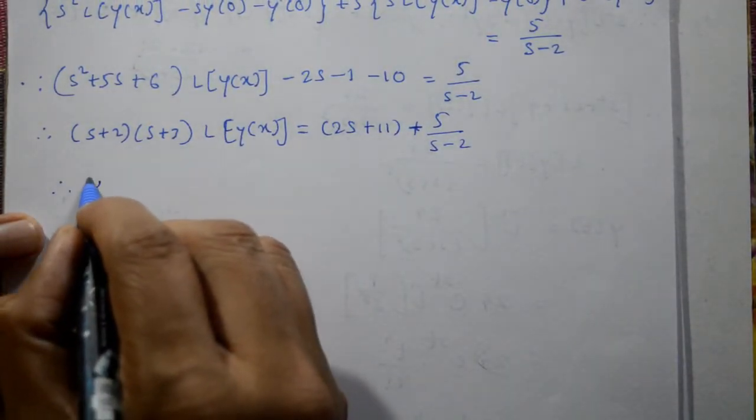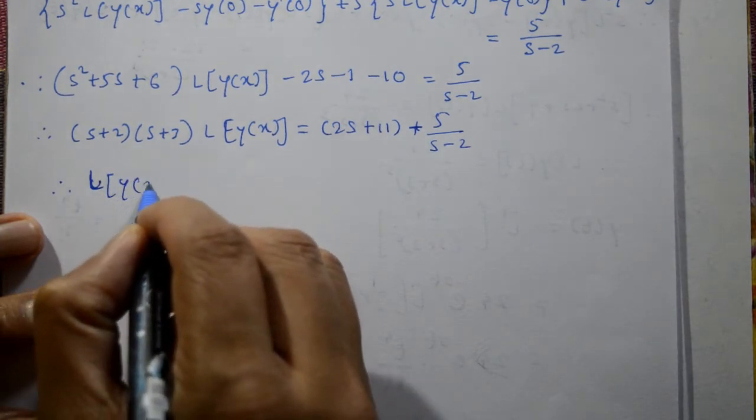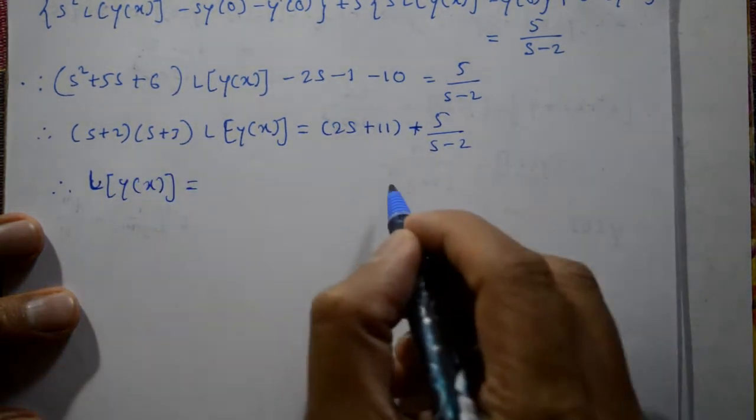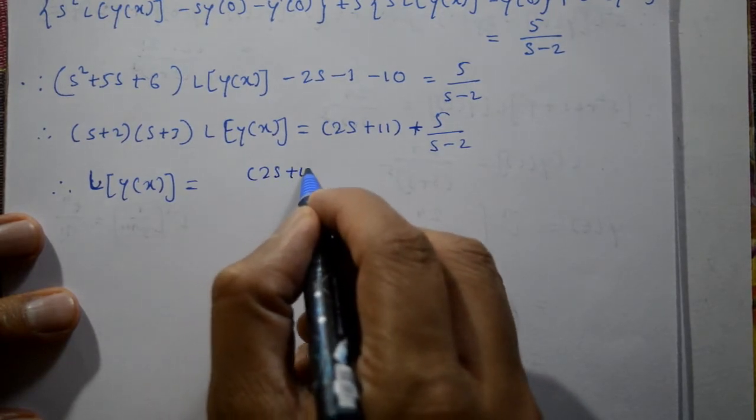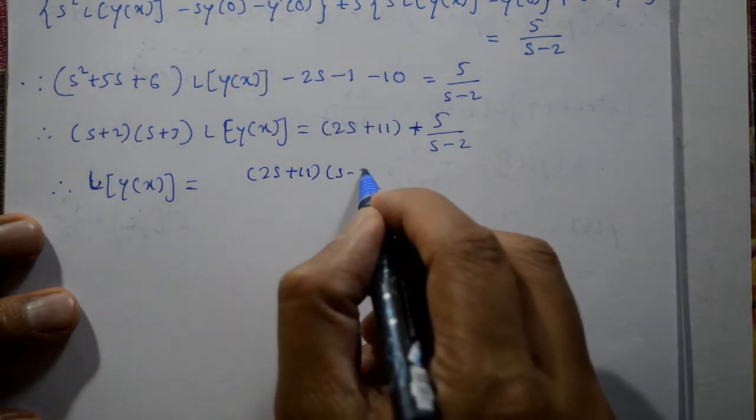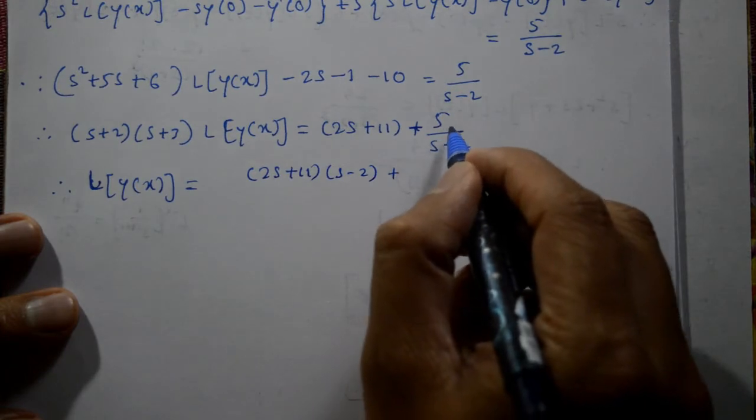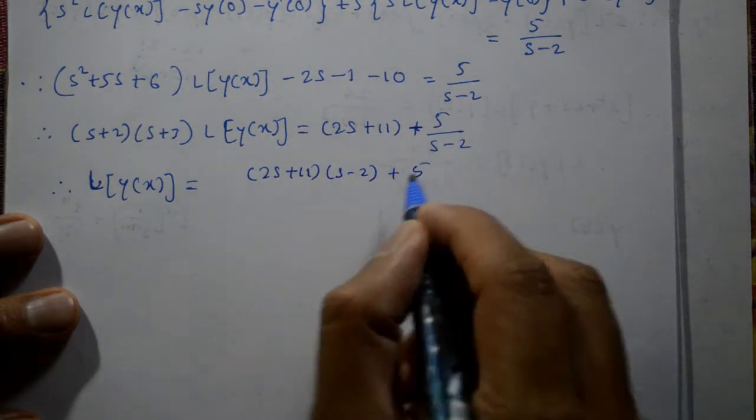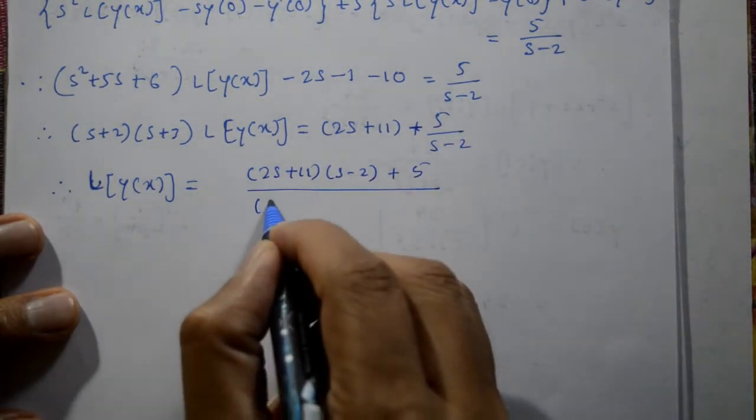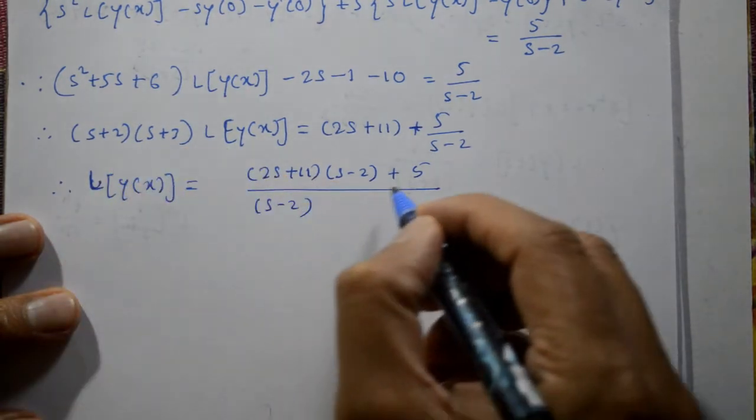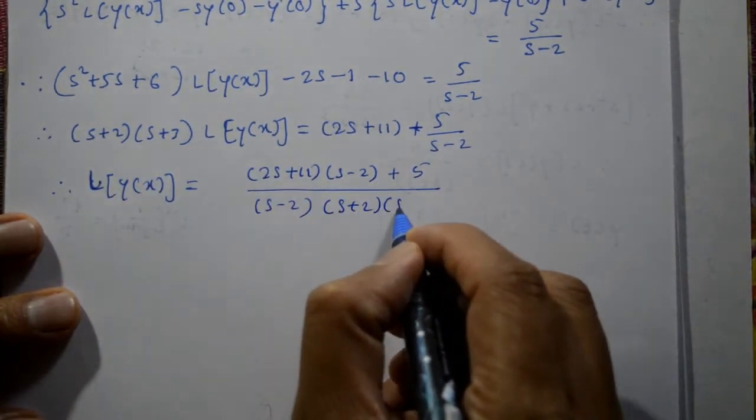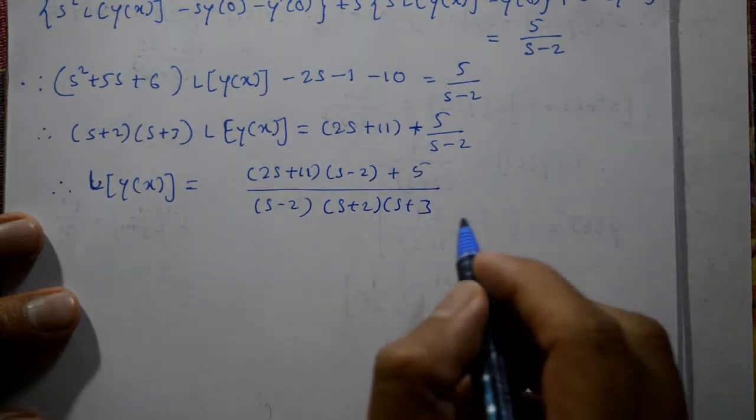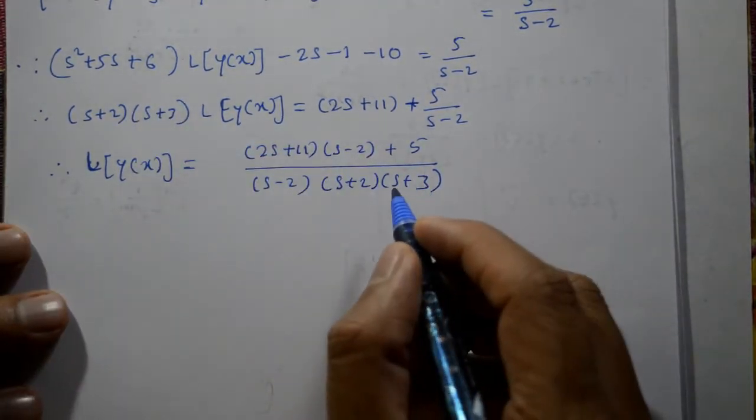Now therefore Laplace of y of x is equal to, taking LCM on right hand side, 2s plus 11 into s minus 2 plus 5, divided by s minus 2 into s plus 2 into s plus 3.